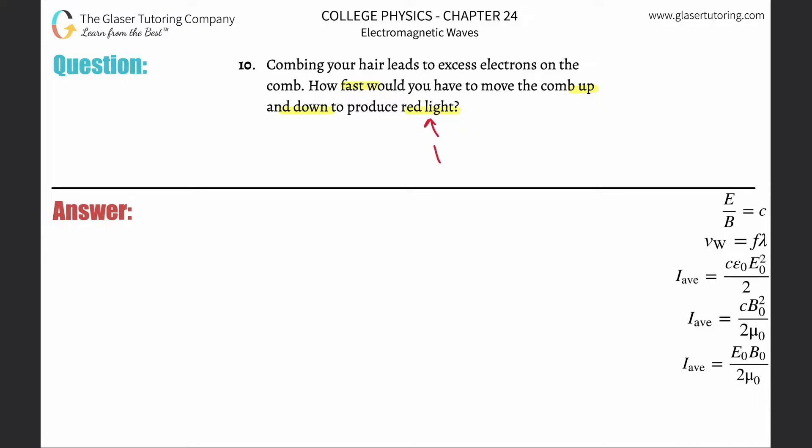that red light basically has a wavelength of 700 nanometers, which would then be equivalent to 700 times 10 to the minus ninth, that is meters. Now it says how fast would you have to...